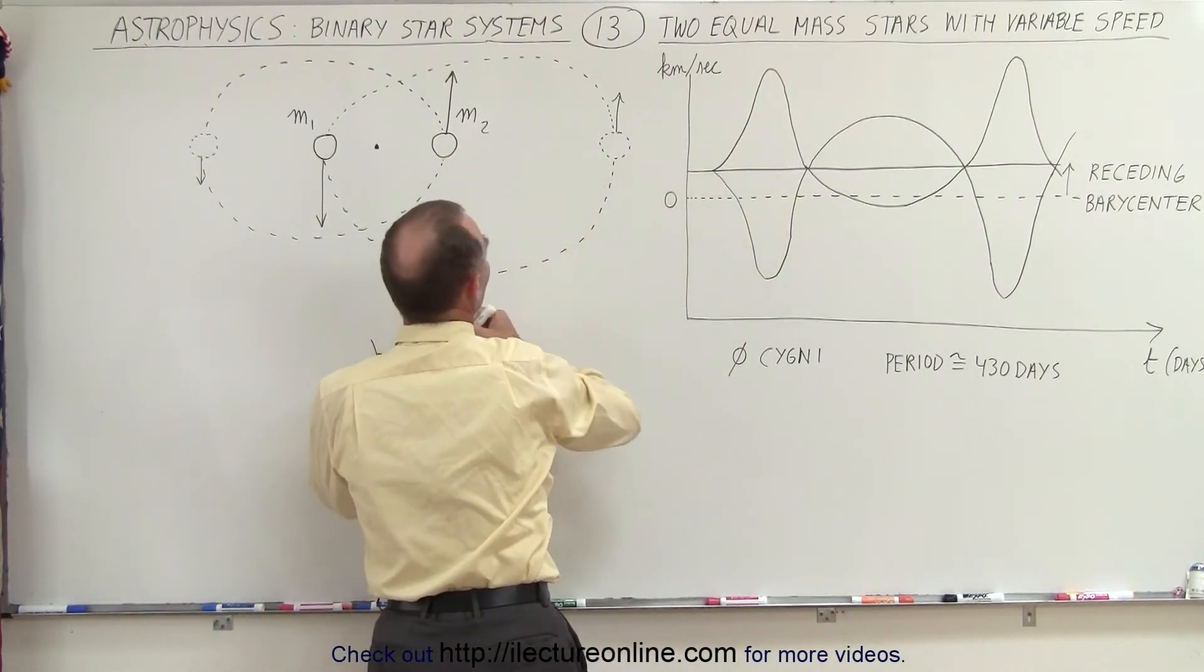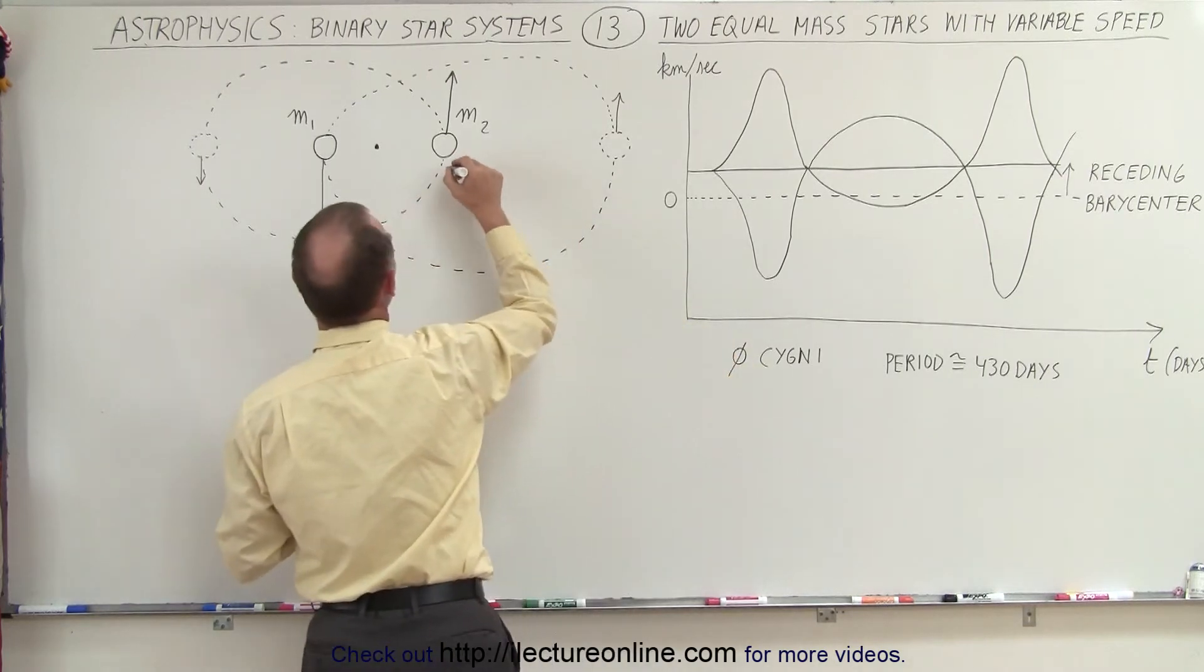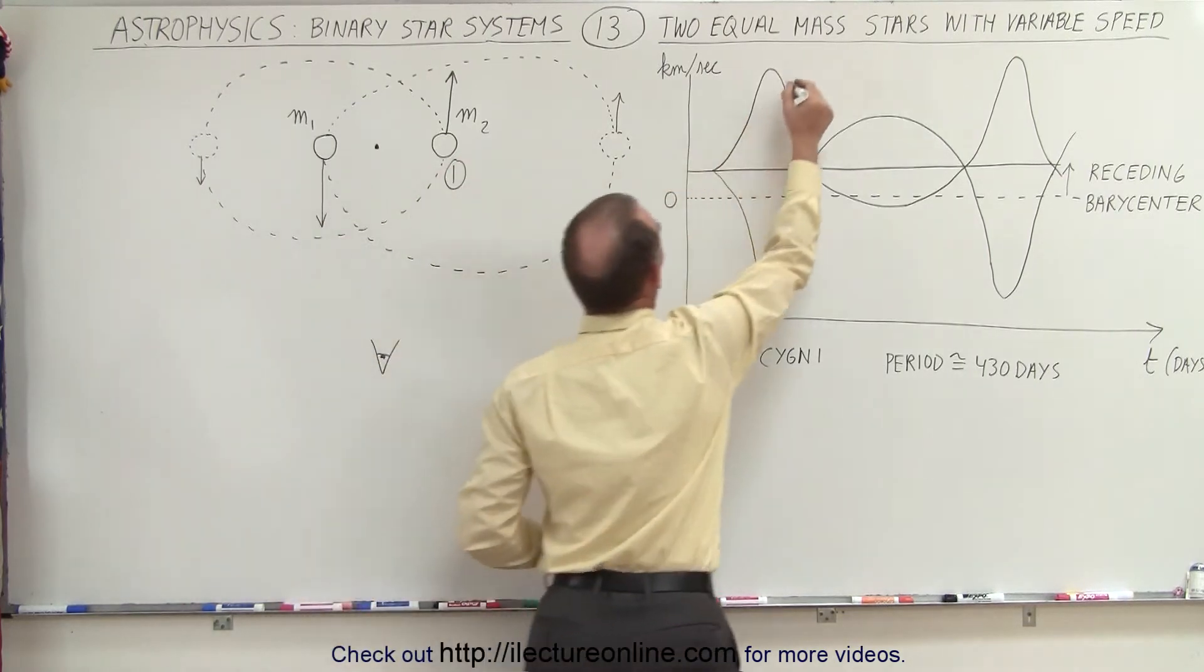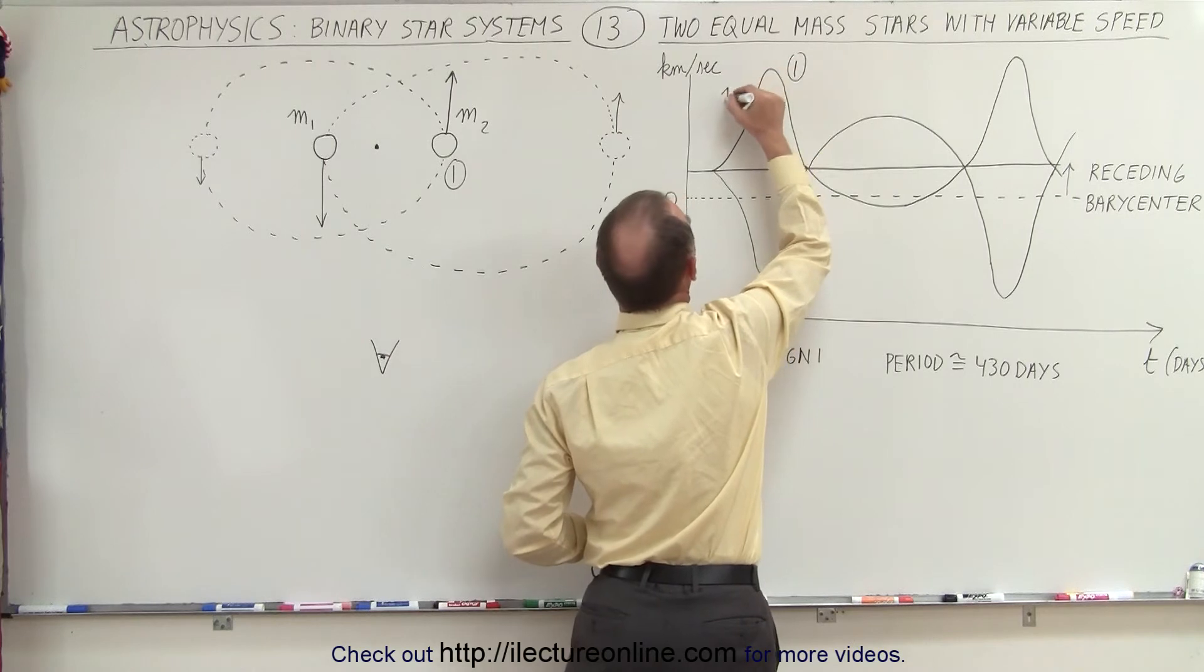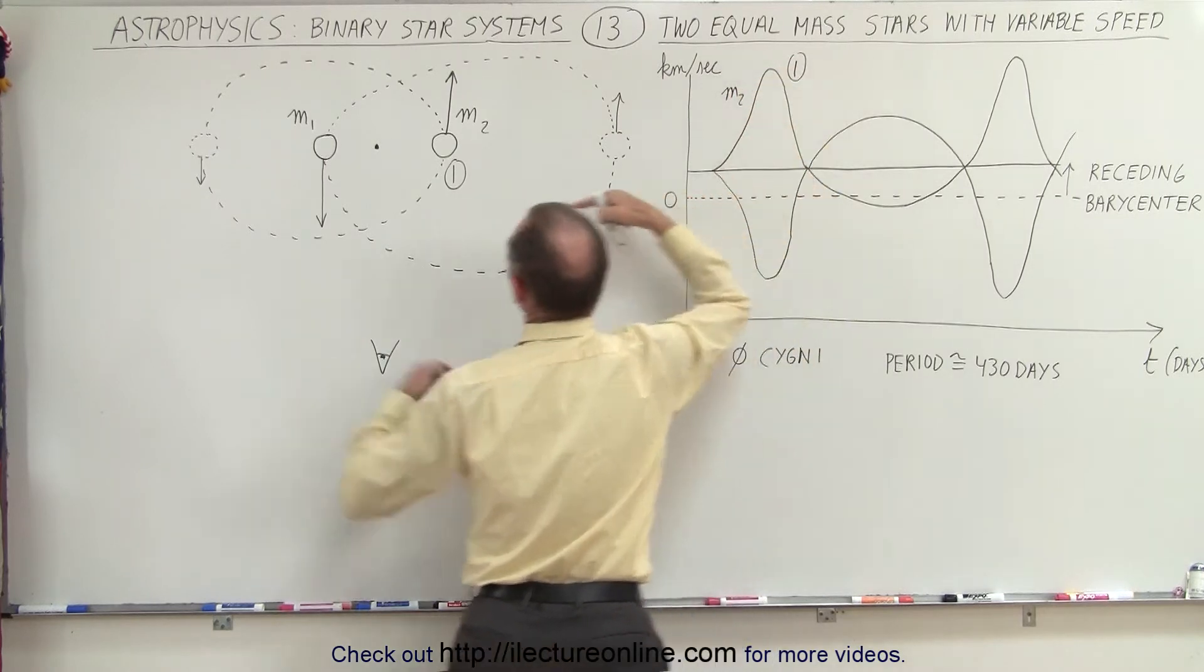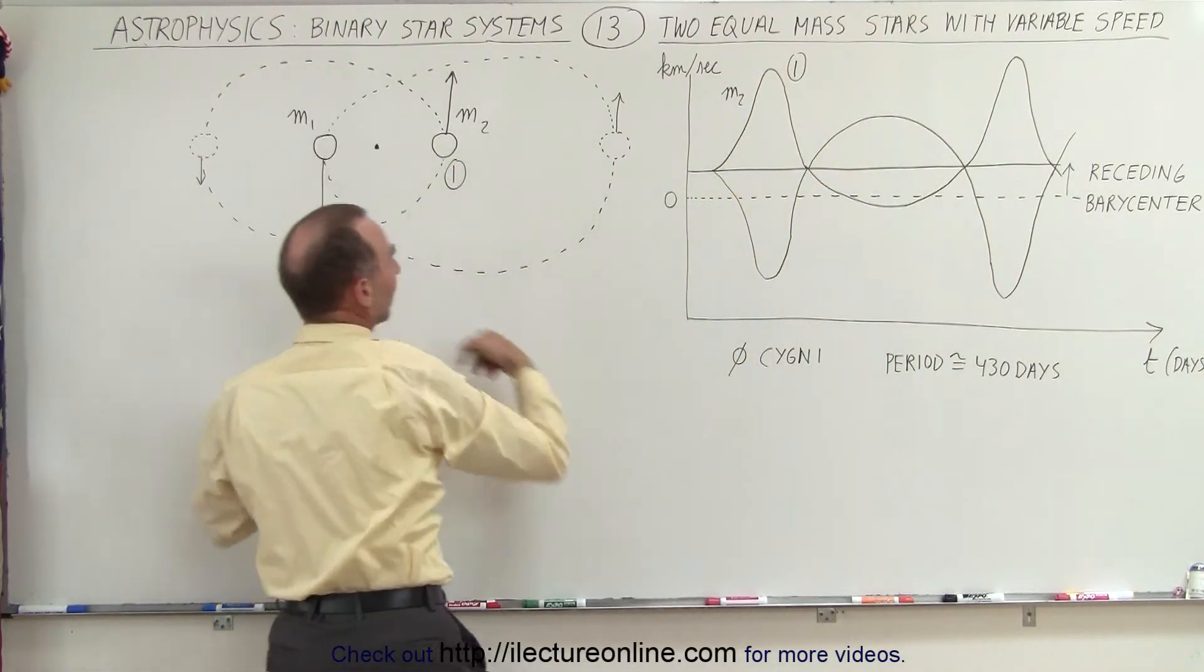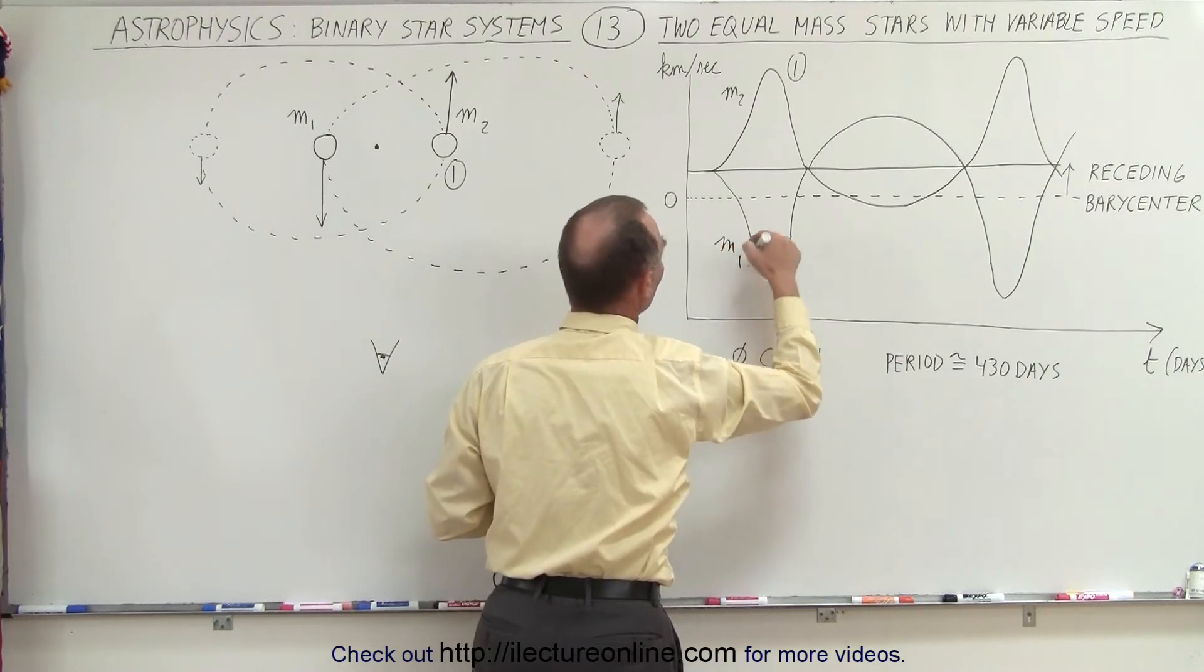And this is the fast velocity. So this here, if I assume this to be case 1, that's what we see right here. So this here is the curve for M2 receding. This is the curve M1 that's approaching. So we have M1 over here, M2 over there.